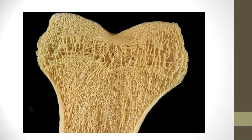Here is what our bone looks like. We have compact bone here and then spongy bone all in here. Now we're going to talk about the microscopic structures — the things that we cannot see with our eyes but instead need a microscope to view.